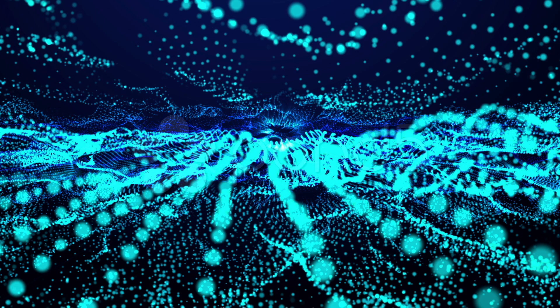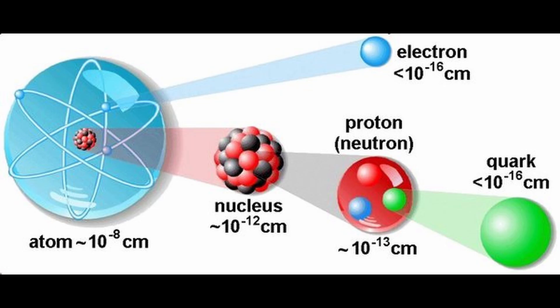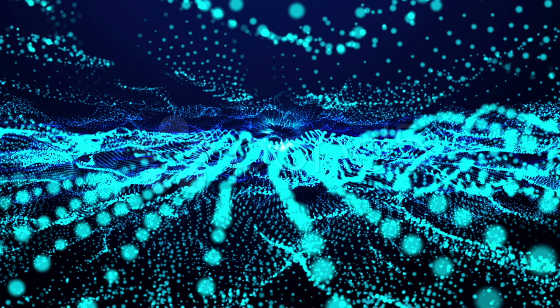As we all know, classical physics has been very successful in describing the behavior of objects in the macroscopic world. However, when we go down to the atomic and subatomic scale, things get very strange and counterintuitive. Quantum mechanics tells us that particles can exist in multiple states simultaneously, they can be entangled with other particles over vast distances, and they can even tunnel through barriers that they shouldn't be able to cross.